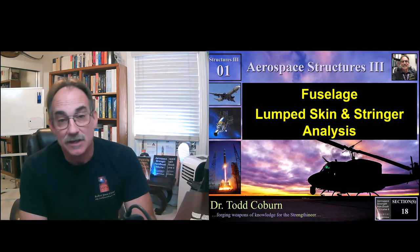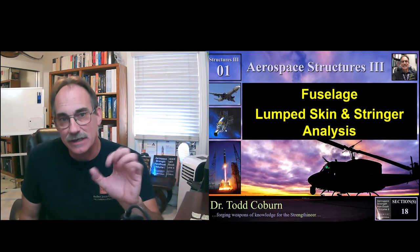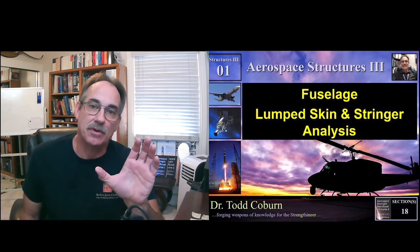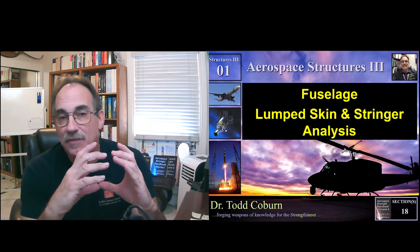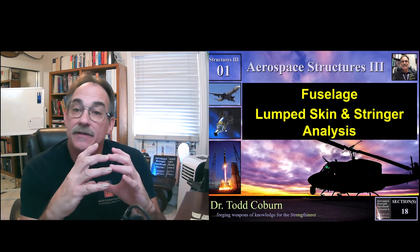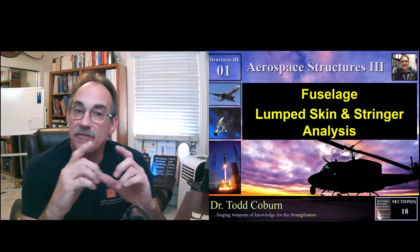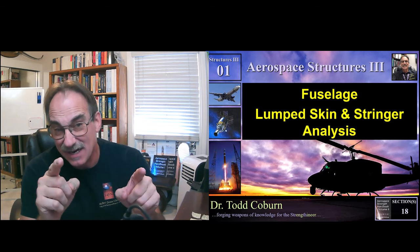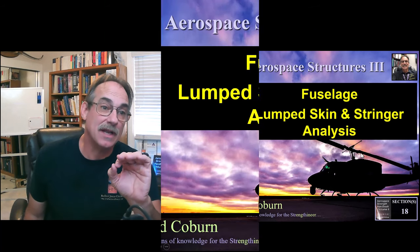Hey folks, Todd Coburn here with the Eurospace Structure Series. This lecture is on analyzing fuselage structures, specifically how we lump the skin and stringer together. This is for hand analysis, and it also feeds into how to prepare good finite element models, which we're not going to cover here, but the same principles apply.